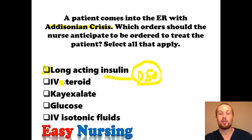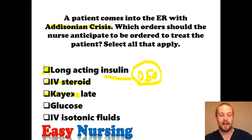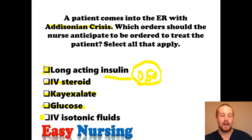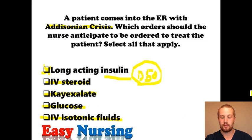These patients have low cortisol levels, so yes, you will give them IV steroids. Remember potassium is high, so you also want to give K-exalate — this medicine makes them excrete the potassium out of their body. They have low sugar levels to begin with and may be receiving insulin, so yes, you want to give them IV glucose. And they're dehydrated because of low aldosterone levels, so they will need IV isotonic fluids like normal saline. The answers here should be 2, 3, 4, and 5.